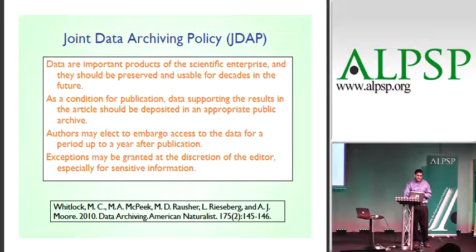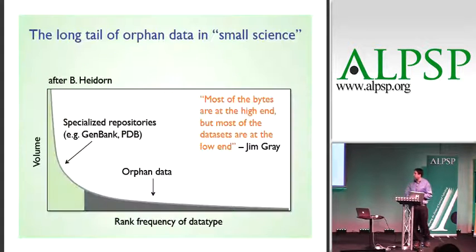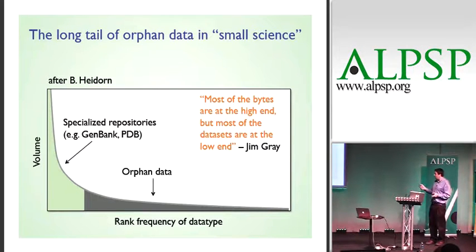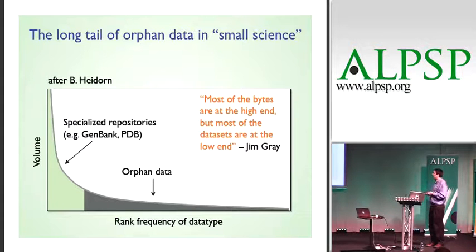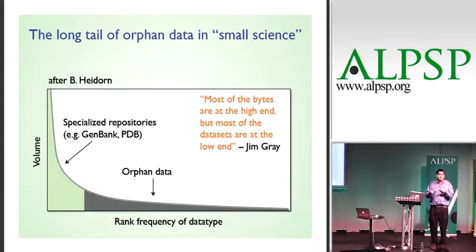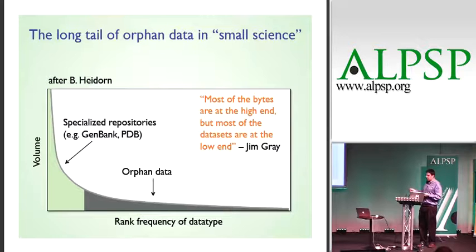It's worth pointing out that the announcement of this policy, led by scientific societies, preceded any data management plan requirements by NSF — this was really a grassroots effort. The problem is that much of the data does not actually have an appropriate public archive, not in life sciences. As Brian Heidorn's conceptual diagram shows, there's a short shoulder of data that's easily standardized for which we have repositories — many of you are familiar with GenBank — but then there's this long tail of orphan data where much of the data resides, like spreadsheets of Bumpus's sparrow data. No one's going to collect exactly the same format; there's no repository for sparrow bone length out there. This is where much of the valuable data for reuse and validation lives.